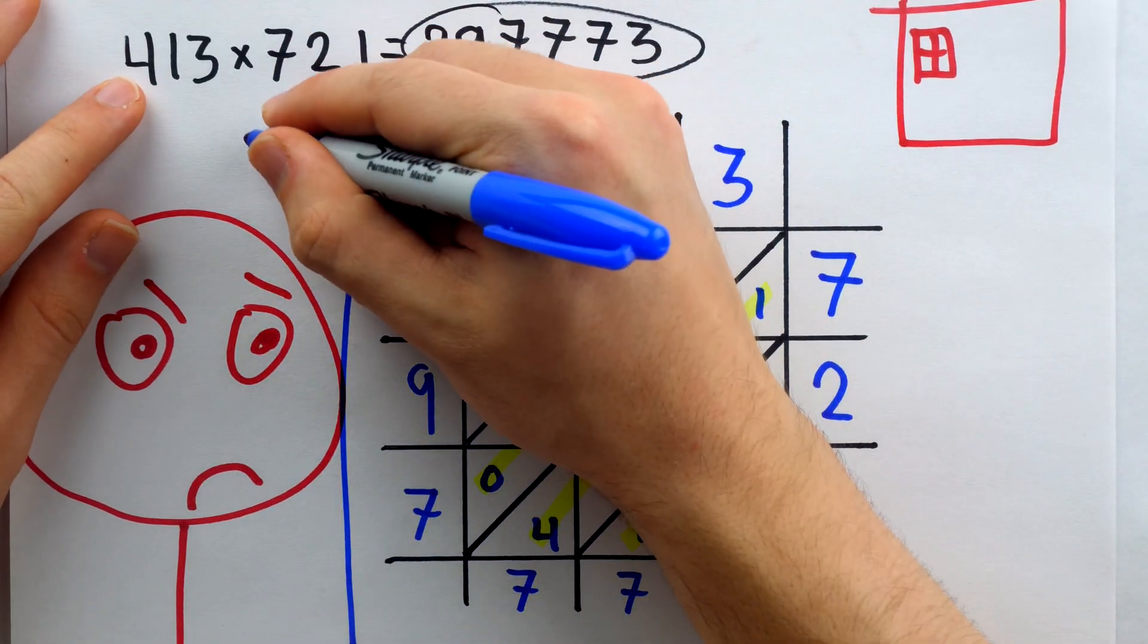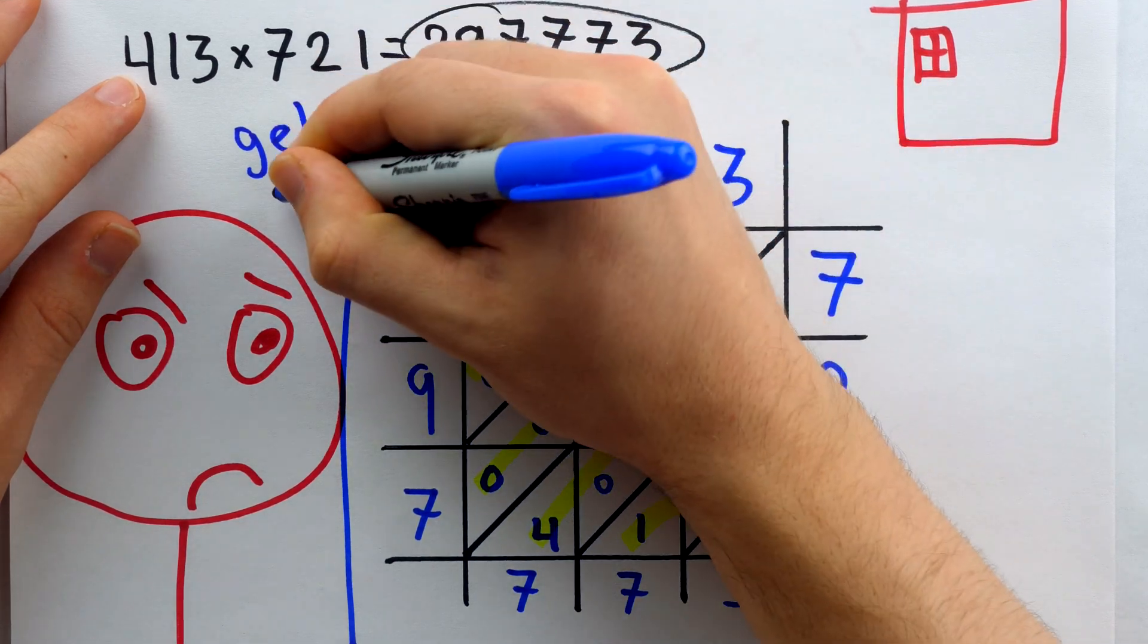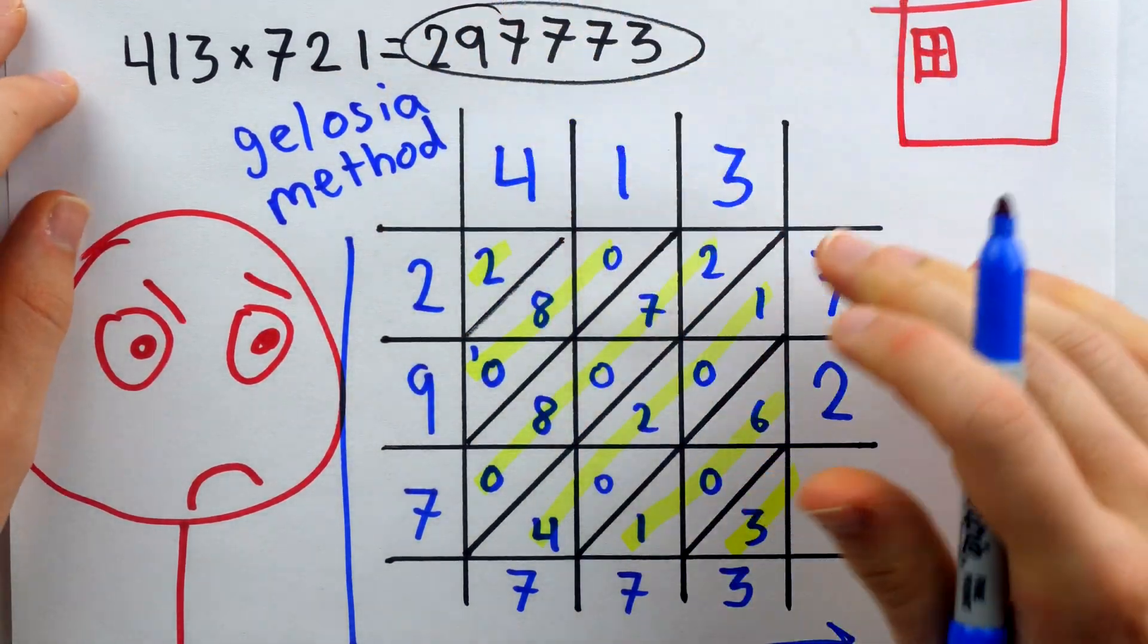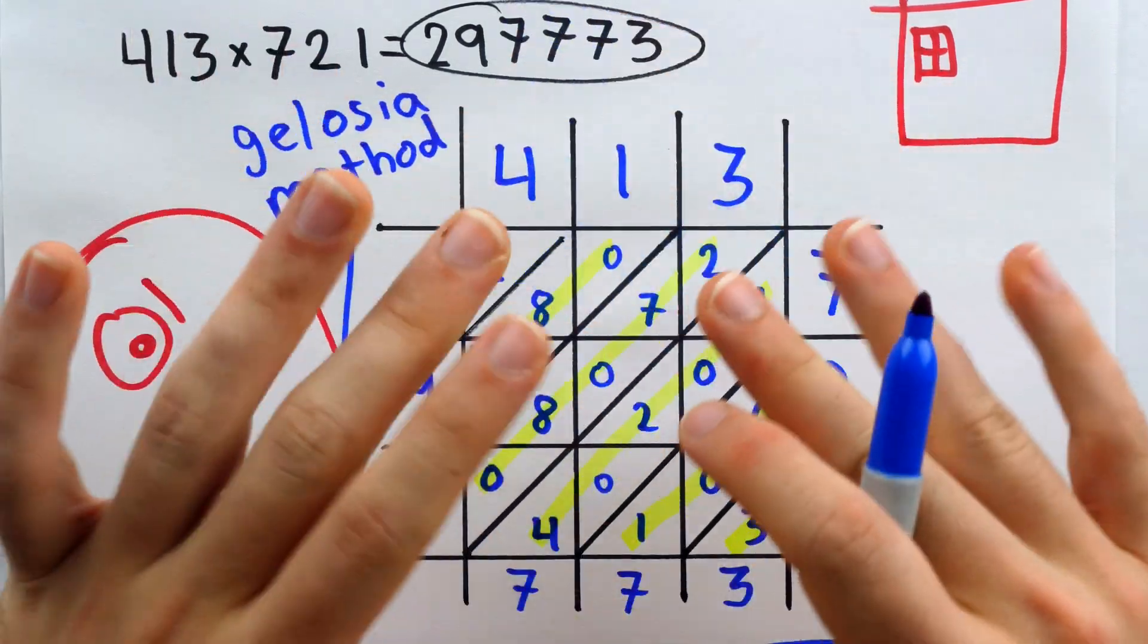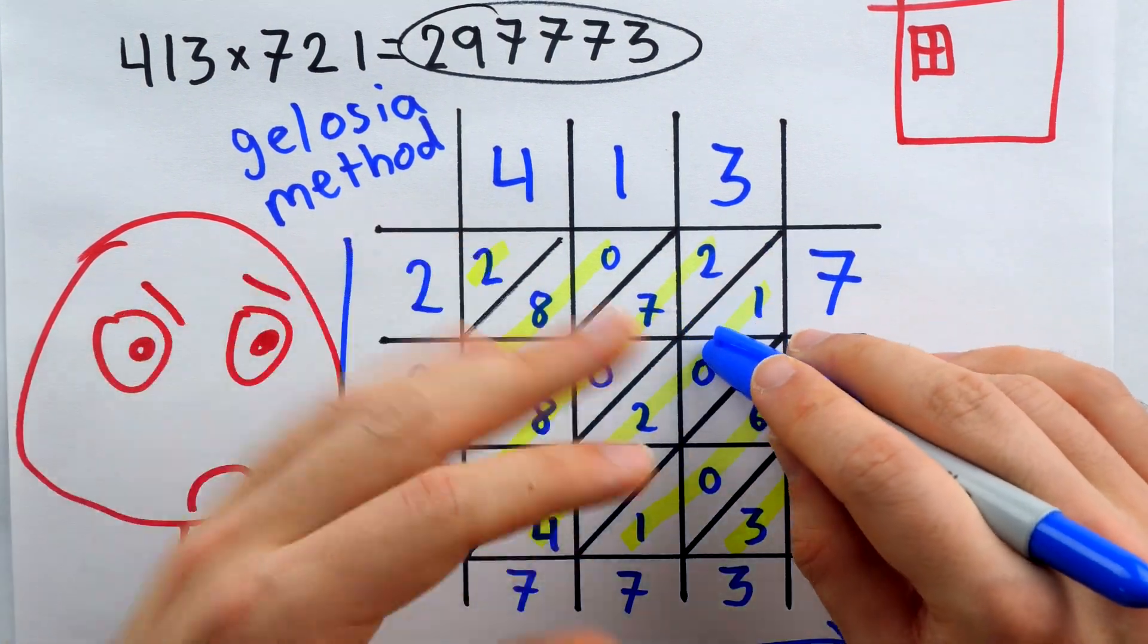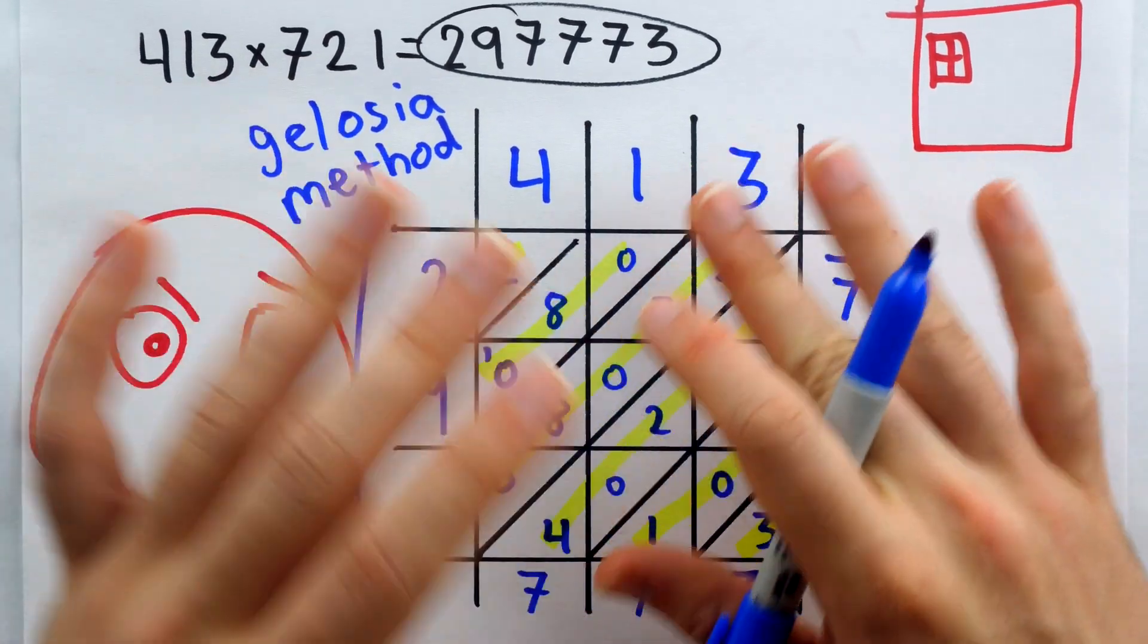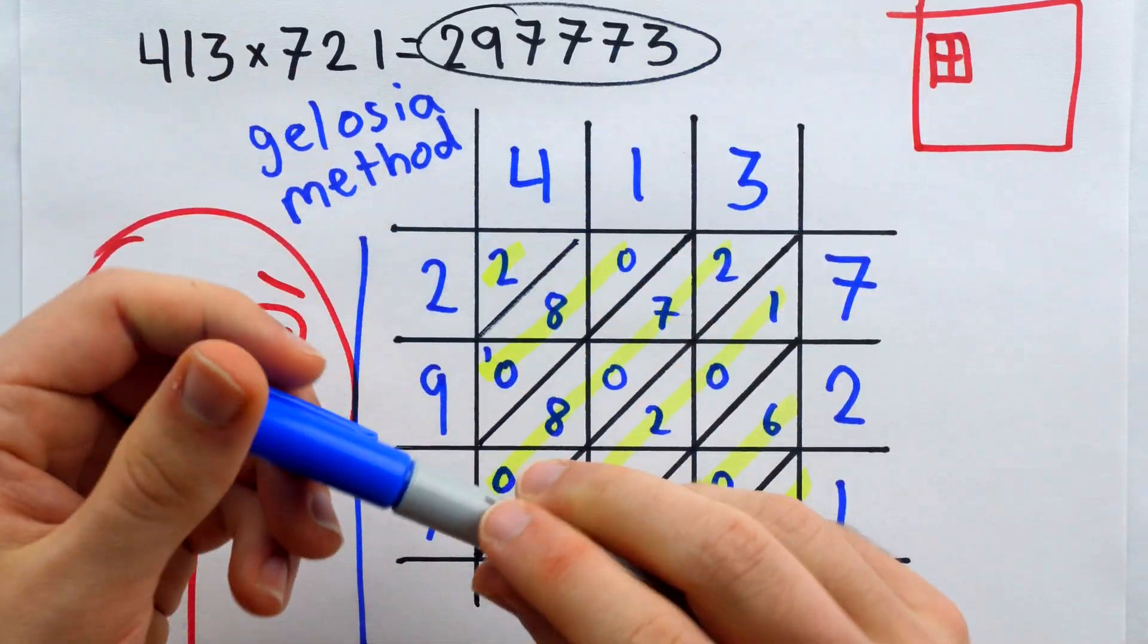So this method of multiplication is actually called the gelosia method. That's the Italian word for jealousy and does indeed come from a jealous spouse who may look through a window, which is resembled by this mathematical method. It does have many other names as well. Perhaps the most common is the lattice method. It's not clear where this method was first introduced, but at least in the world of Arab mathematics,